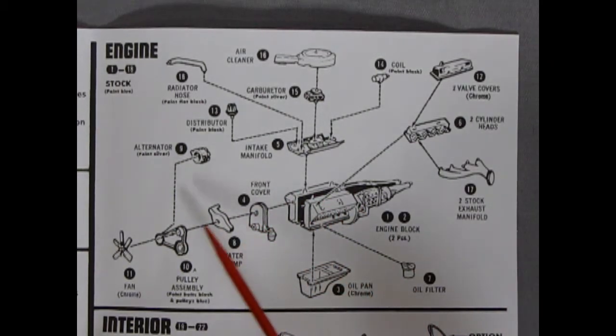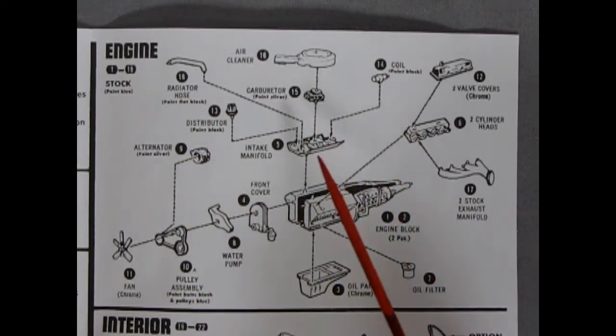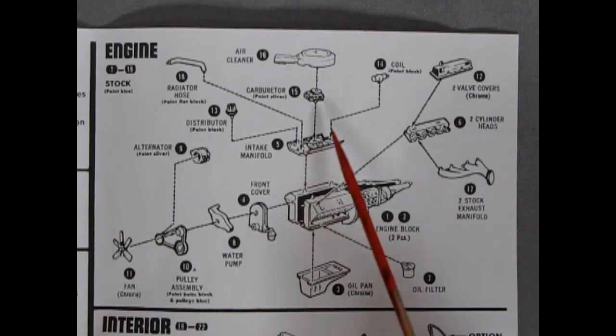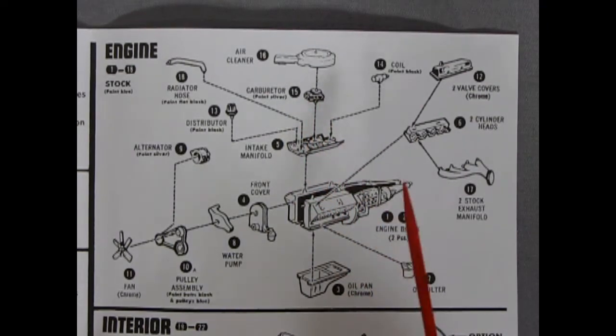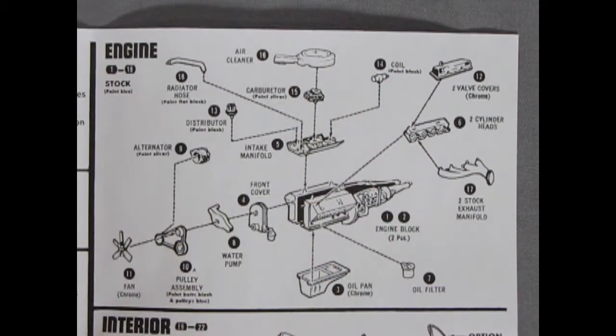And then our water pump, our pulley, and our fan. The alternator going on. The radiator hose. And the single carburetor. This is the rather thin version of this engine. Then we've got our coil and our air cleaner.